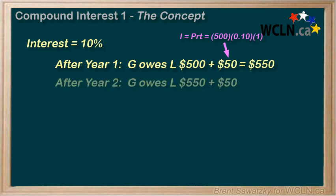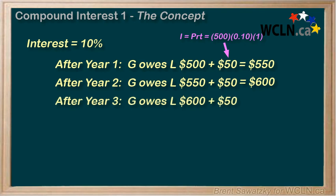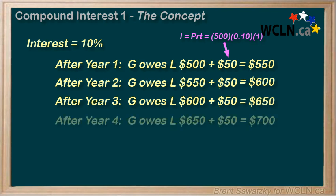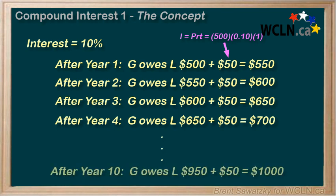After year two, Jerry owes another $50 in interest for a total of $600. After year three, Jerry just owes another $50 in interest for a total of $650. Year after year, Jerry holds on to Linda's money and the interest accumulates. Jerry's happy and Linda's happy — 10% per year is being added up, so that's $50 per year. That seems reasonable, right?